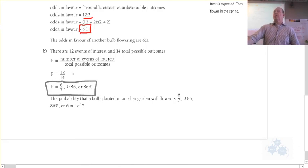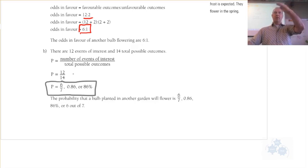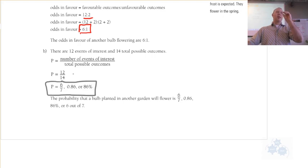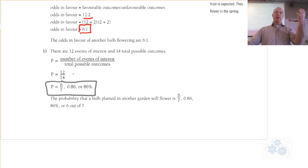In summary, the difference between odds and probability: probability is the number of desired events divided by the total. Odds in favor would be the desired events in a ratio with the undesired — desired versus undesired, or positive versus negative results.